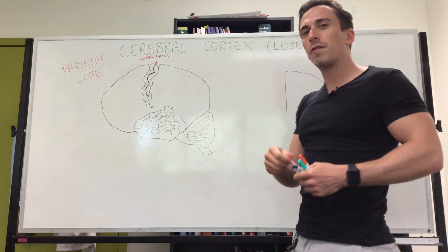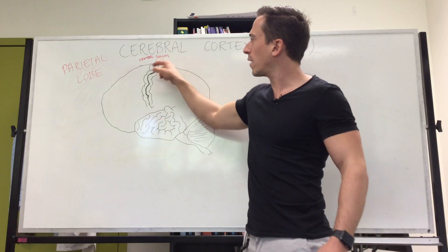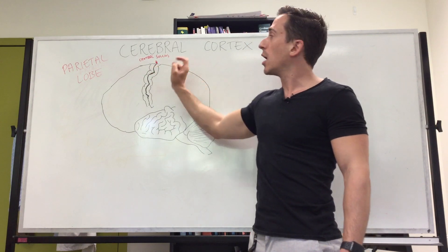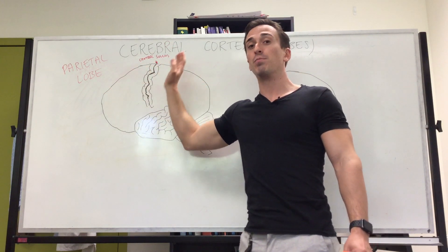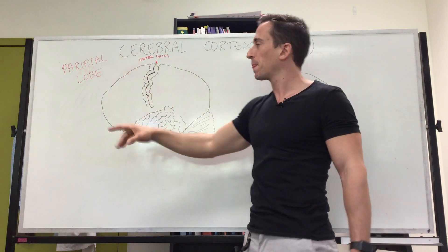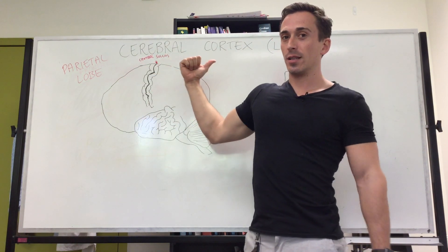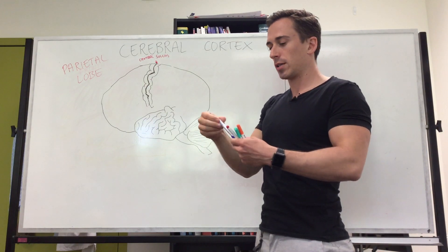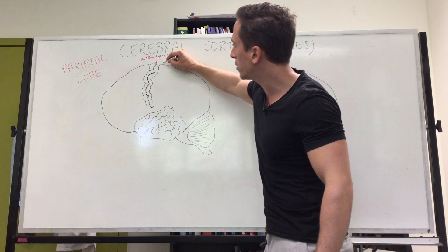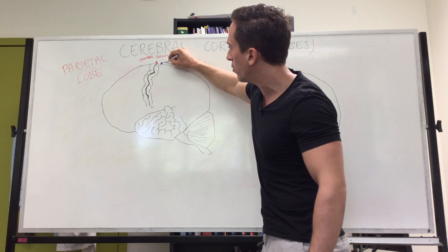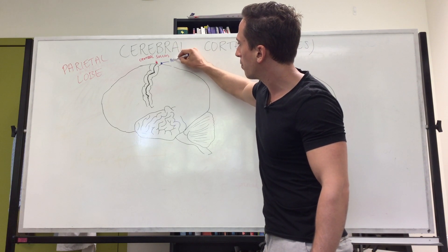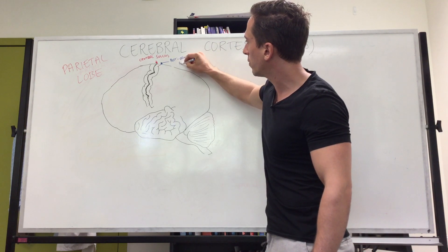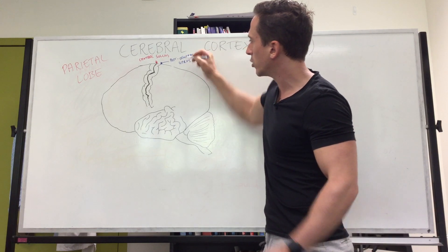Remember in the frontal lobe video we said that the groove just in front of the central sulcus is called the pre-central gyrus because it's before the central sulcus. We're going to talk about the groove that's after the central sulcus — this is called the post-central gyrus, and it is located in the parietal lobe.